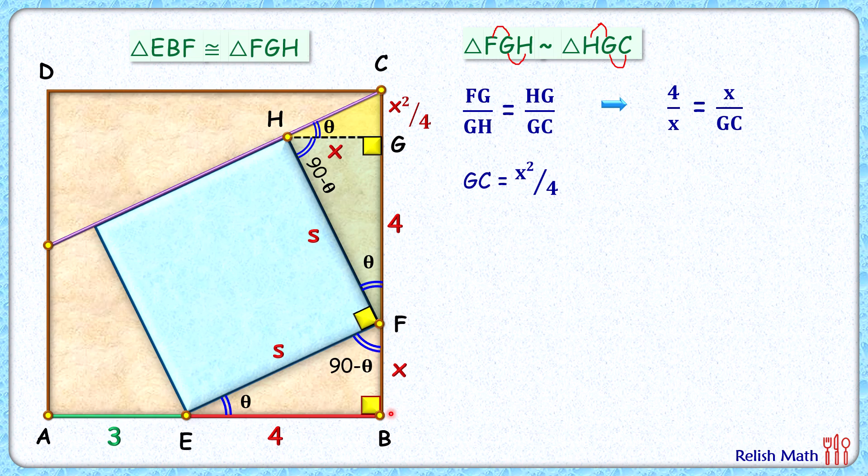Now if you see, this full length of the square, that is x plus 4 plus x squared by 4, will be equal to AB length, that is 3 plus 4, or 7 centimeters.